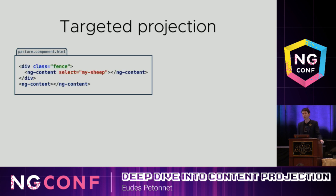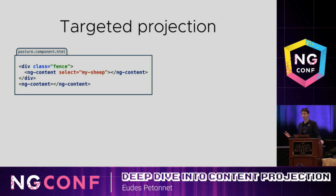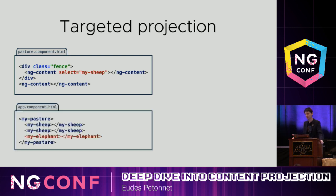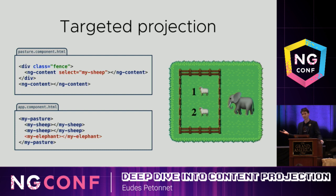Another very common case that most of you know is targeted projection. ng-content offers a select attribute that can take any CSS selector. Here I'm using an element selector for my sheep, but it could be a class selector with a dot, or an attribute selector with brackets — anything you want. We have our targeted ng-content with select, and outside the fence a catch-all ng-content. So sheep go inside the fence and anything else goes outside. If a user tries to sneak in an elephant next to the sheep, the sheep end up inside the fence and the elephants stay outside.